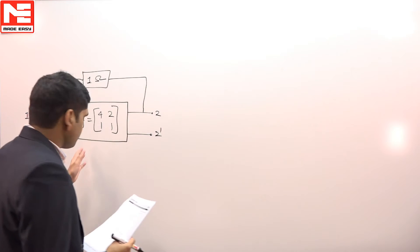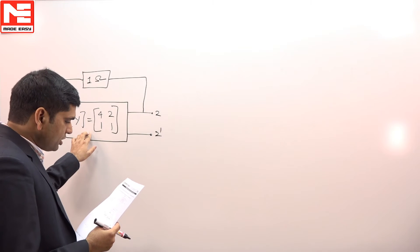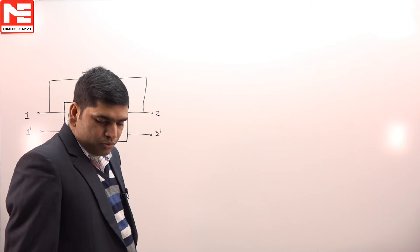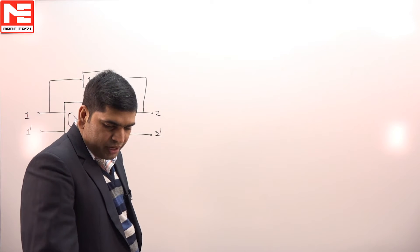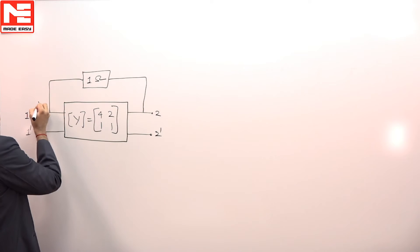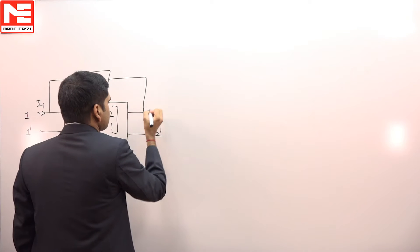In this question we have been given a network. For this network, Y parameter is given. One ohm is connected across this and we need to calculate the Y parameter for the overall matrix for this whole network. Let us assume that this is i1 and this is i2.